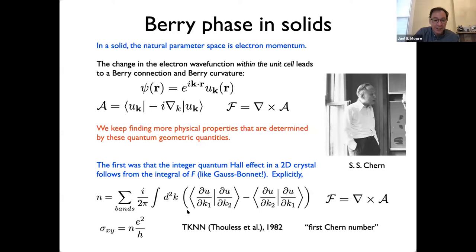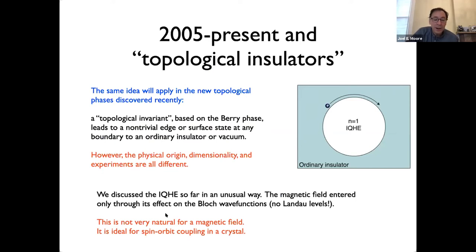The Chern number — also called the TKNN integer — tells me how much a filled band contributes to the integer quantum Hall effect. This was the first example of wave function geometry giving something quantized that you can measure. Now, one reason for caring about the Berry phase is that you can ask the same question in other materials. For topological insulators, which have been topical for a while: understanding the 3D topological insulator is what triggered the study of the magneto-electric effect.